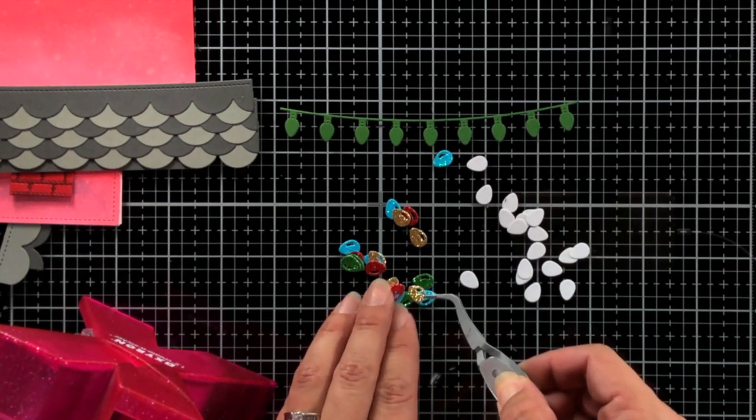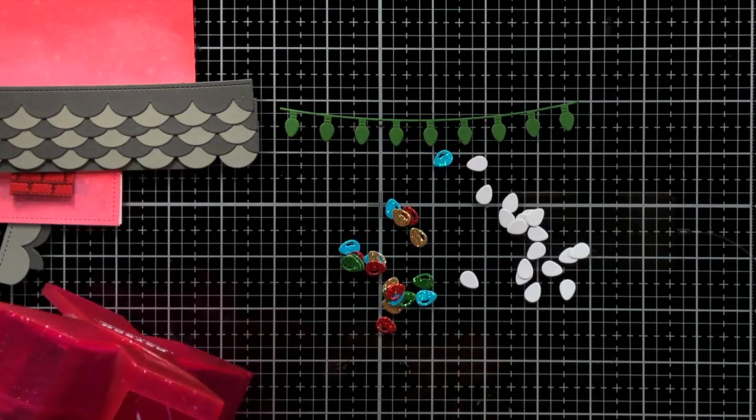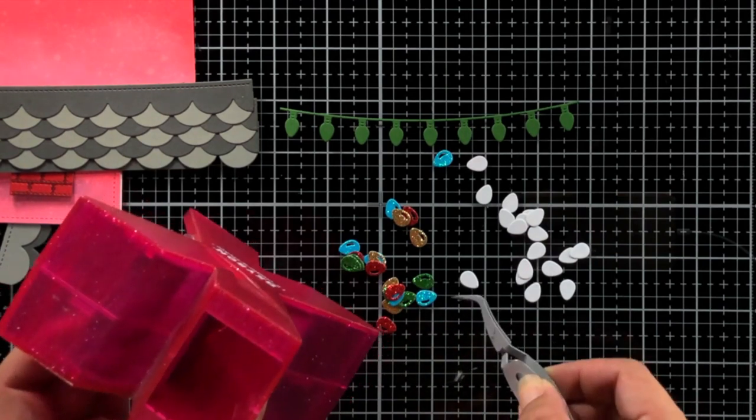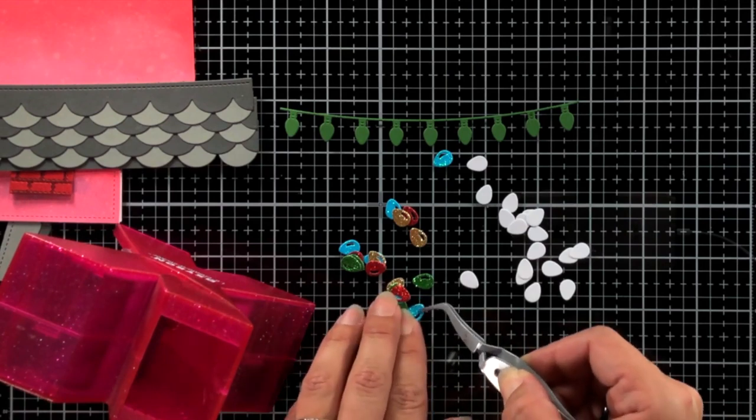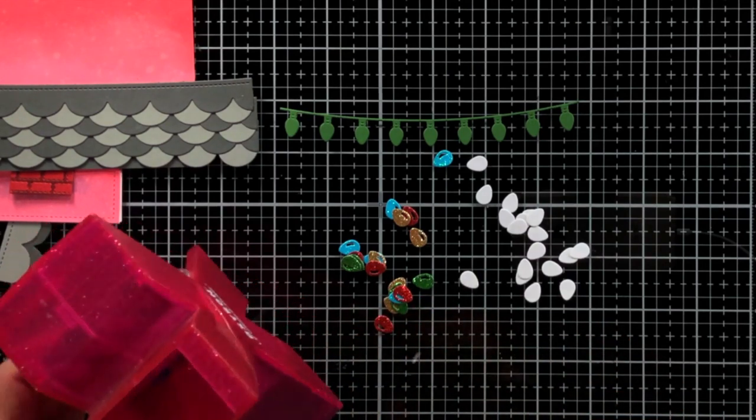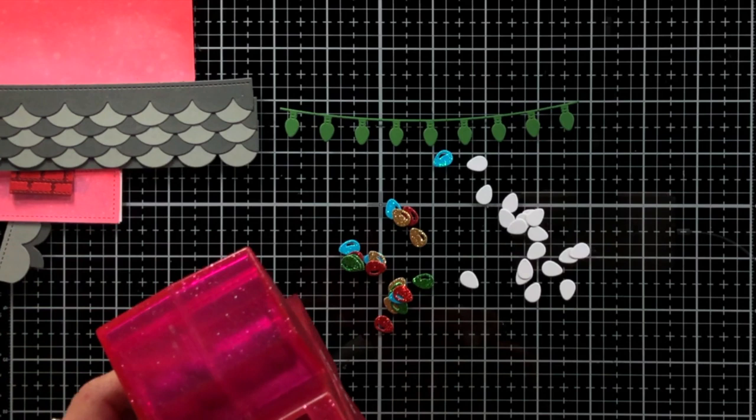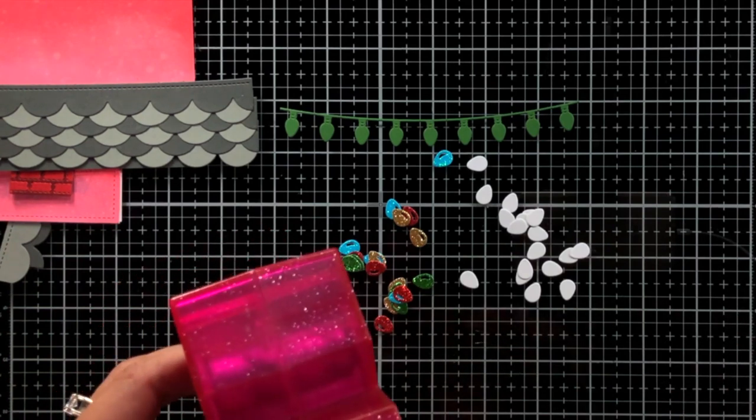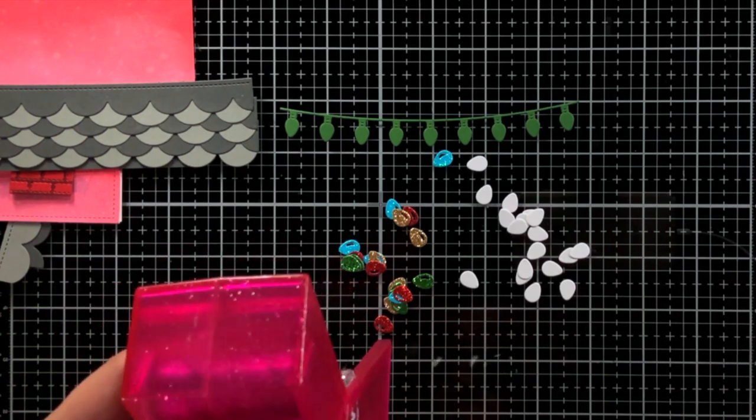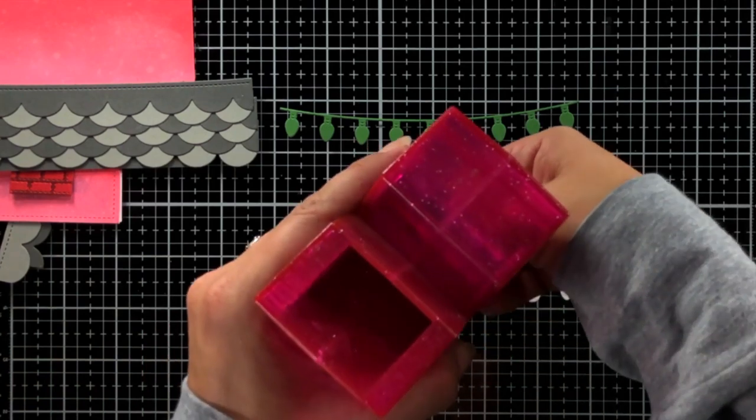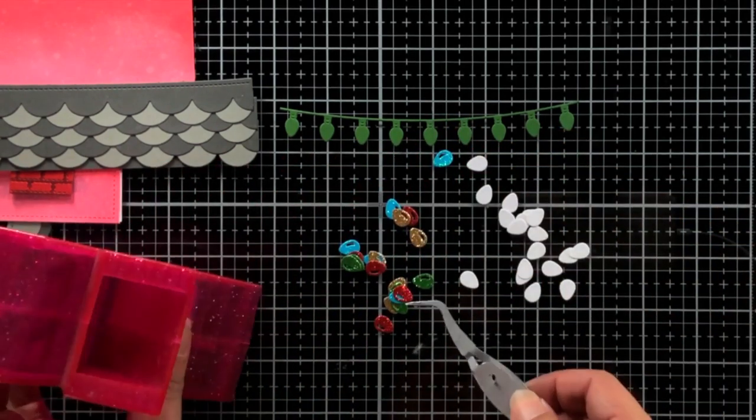Now I'm using the mini string of lights and these are so cute. I die cut the string from Noble Fur cardstock. I have the backing of the lights with white cardstock. And then I took the front of the light so it has the little gleam in it. And I used just a variety of glitter cardstock from Lawn Fawn.